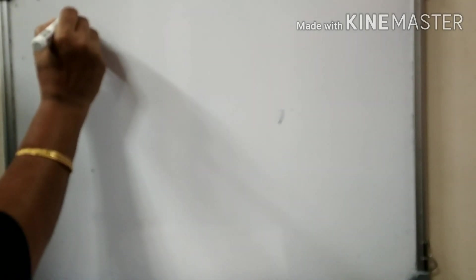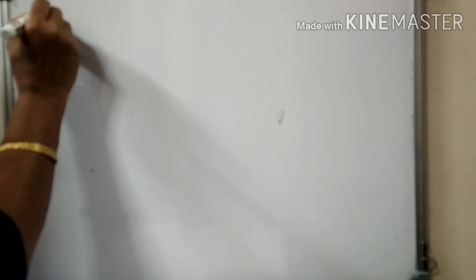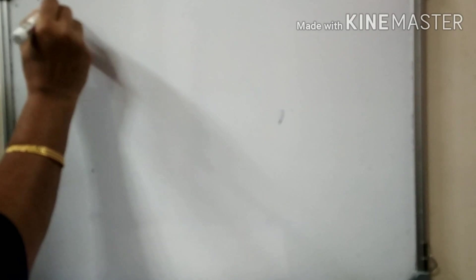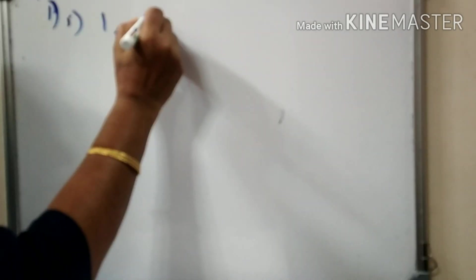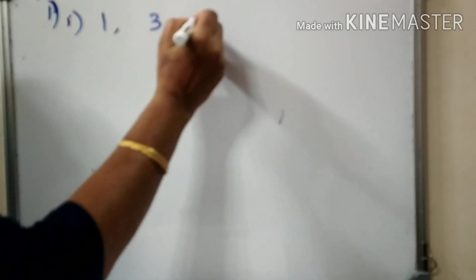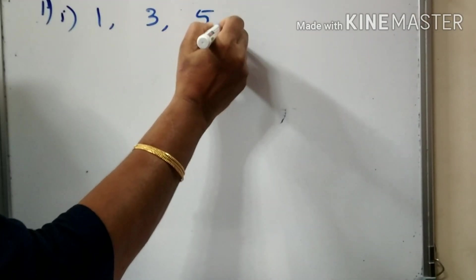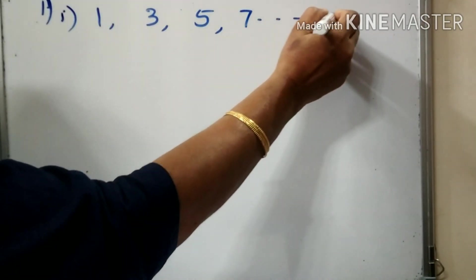This is the first part — there are 4 parts. The sequence of odd numbers: 1, 3, 5, 7, etc.